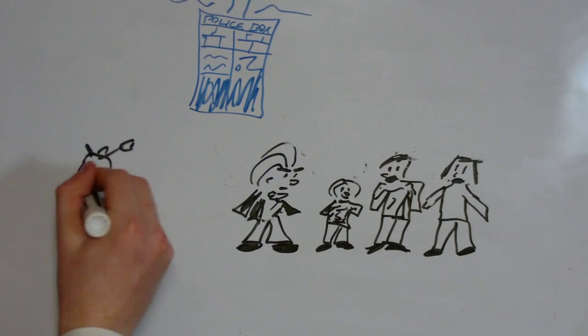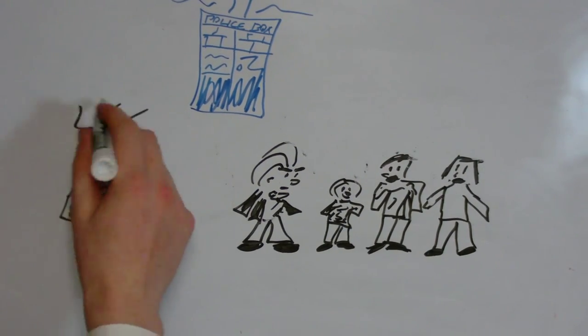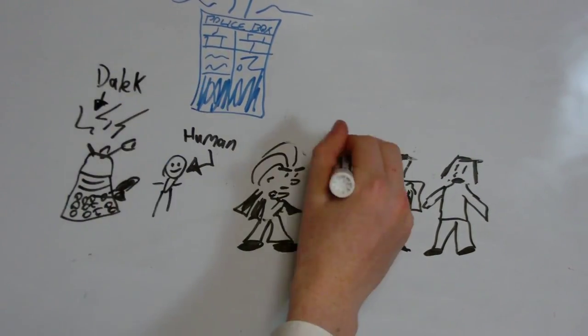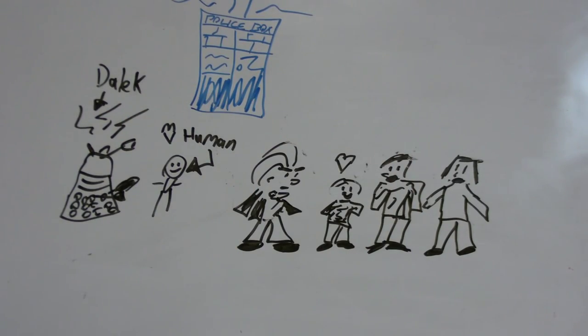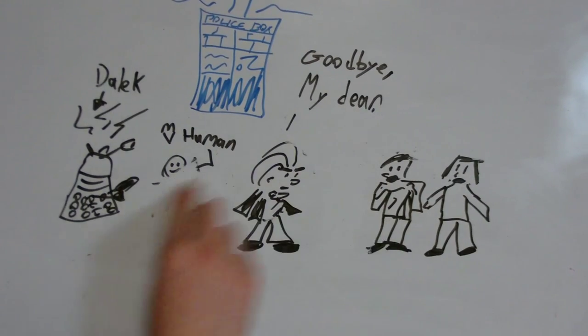But then one day, after defeating the plans of the Daleks, the most evil aliens in existence, Susan fell in love with a human. She stayed there with him, at my suggestion. I promised to come back one day. I meant it, of course. I always mean it.